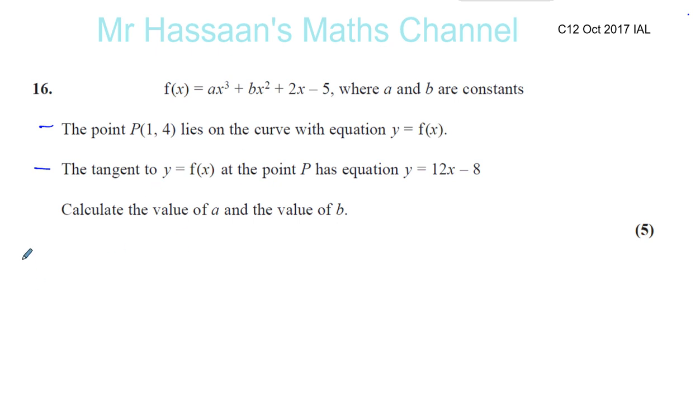So first of all, let's just use the first piece of information, P(1,4). That's the x-coordinate and that's the y-coordinate. So if we substitute these into the equation, I know that basically when I put 1 into the equation, 4 should come out as my result.